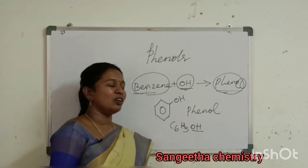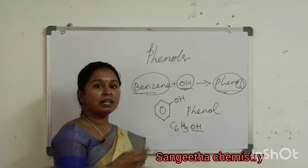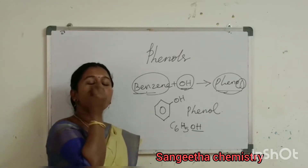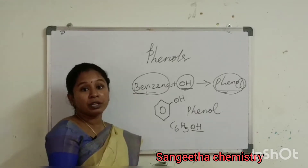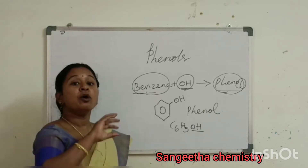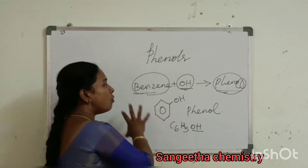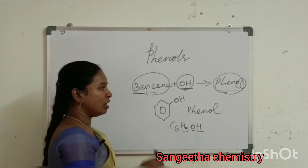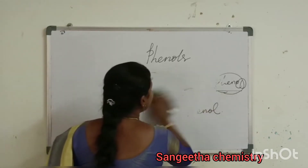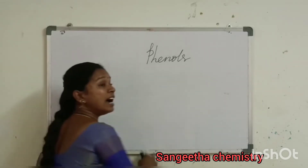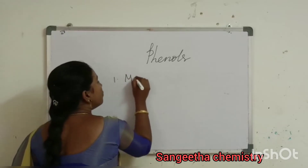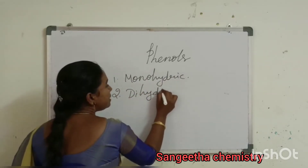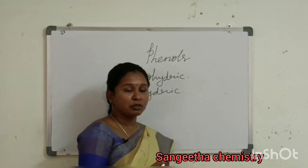What is phenol? How do you classify phenol? Phenol is classified as monohydric phenol and dihydric phenol. Based on the number of OH groups, we classify phenol. How do you classify? That is why we classify it.